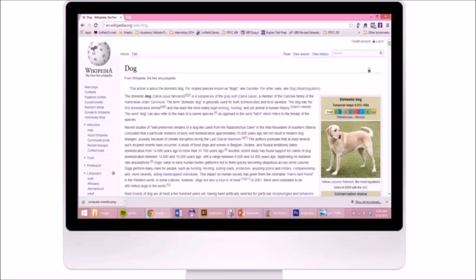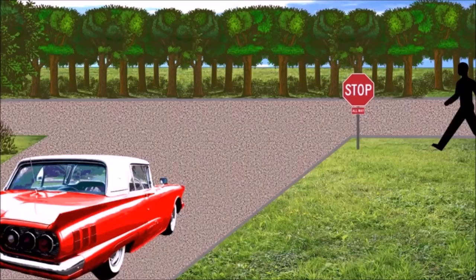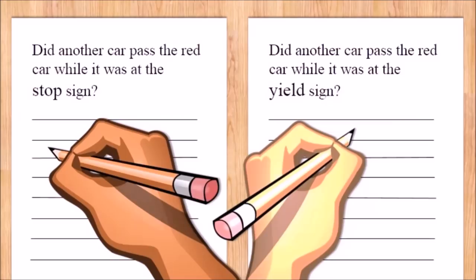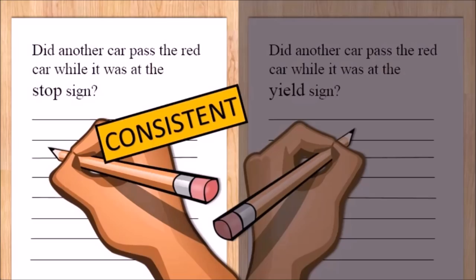Literally hundreds of studies have shown the misinformation effect. In one study, Loftus and her colleagues showed people slides of a car accident. Then they asked the participants questions about the scene. Some were given a question with misleading information that mentions a yield instead of a stop sign, while some saw a question with consistent information. Later, those who were misinformed were about 20% more likely to incorrectly report that they saw a yield sign compared to those who received the correct information.